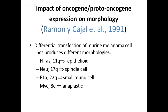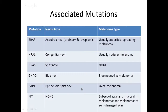Going back to 1991, this paper shows how various genes can drive histomorphology in melanocytic tumors. Investigators differentially transfected murine melanoma cell lines, and transfection of various oncogenes drastically changed the cytomorphology: HRAS made melanocytes take on a very large epithelioid-like appearance, NEU induced spindle cell morphology, and MYC — probably the most potent oncogene — induced an anaplastic cytomorphology. We know various mutations are associated with benign nevi: BRAF in acquired and dysplastic nevi, NRAS in congenital nevi, HRAS in Spitz nevi, and GNAQ in blue nevi.